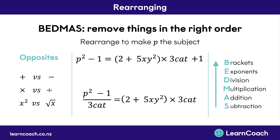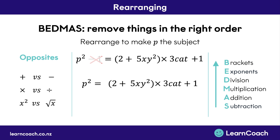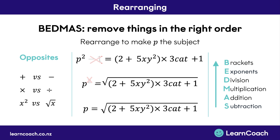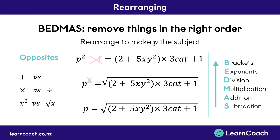We do the opposite of minus 1 on the opposite side — plus 1 — then cross out the minus 1. All we're left with is p squared. The final thing to remove is the squared, and the opposite of a squared is a square root. So we put a big square root over the whole opposite side of the equals sign, cross out the squared, and all we're left with is P equals. It doesn't matter how messy the opposite side gets — you just write it all in there step by step, and this would be your answer.